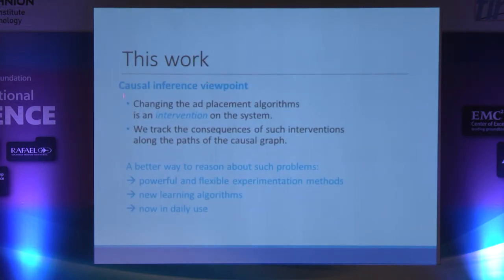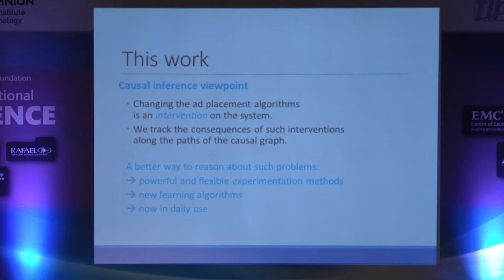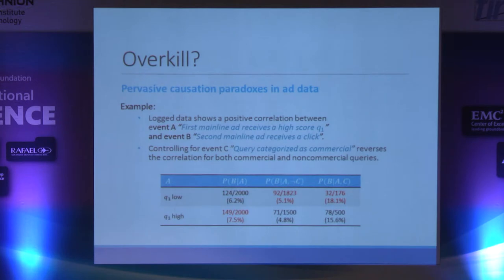In this work I'm taking the causal inference viewpoint. I'm going to assume that changing the ad placement system is an intervention on the system, and I want to understand and track all the consequences of this change. My claim is that this is a better way to reason about such problems — it yields powerful and flexible experimentation methods and new learning algorithms, and it works quite well. The dead ringer that suggested going this way is that you have pervasive causation paradoxes in the data.